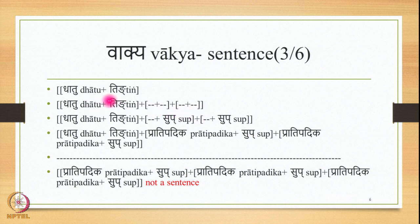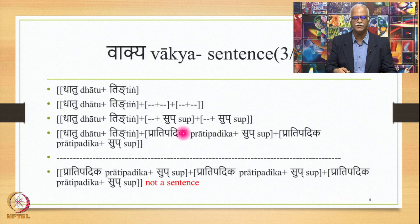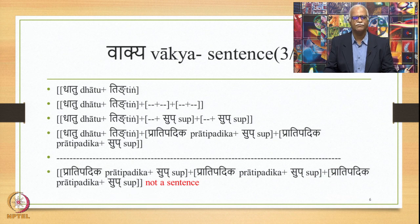A Tiṅ suffix is always added to a Dhātu. So Dhātu plus Tiṅ qualifies to be called a sentence. If you have Dhātu plus Tiṅ as one word and other words beside it, those other words could be Dhātu plus Tiṅ, or Prātipadika plus Sup. So the fully expanded formula is: Dhātu+Tiṅ (one word) + Prātipadika+Sup (second word) + Prātipadika+Sup (third word) — and this entire unit can still be called a sentence. But if you have only Prātipadika+Sup for all three words, that cannot qualify as a sentence, because it does not contain a single Tiṅ. This is extremely important as a definition of Vākya or sentence.